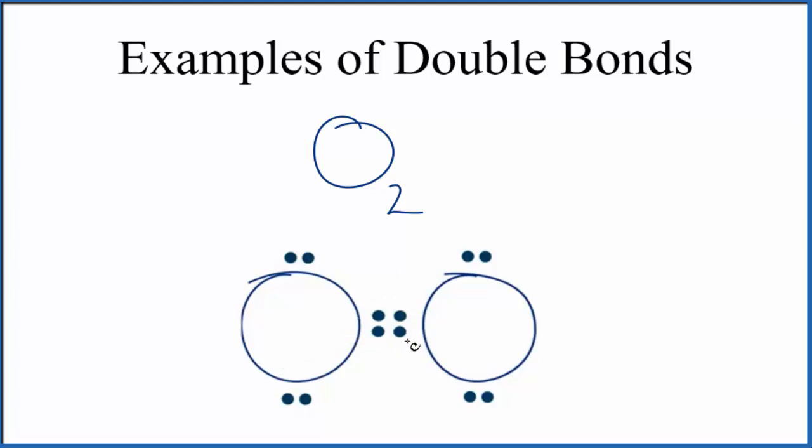We could also write the double bond just using lines, like this. Here, each one of these lines represents a pair of electrons, a pair of shared electrons in the double bond.